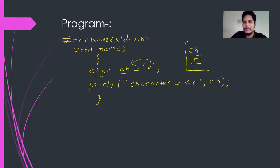Suppose this is the main memory and inside the main memory, the compiler will create a variable ch, which is of character type and the value, that is p, will be assigned to ch because it is an assignment statement.